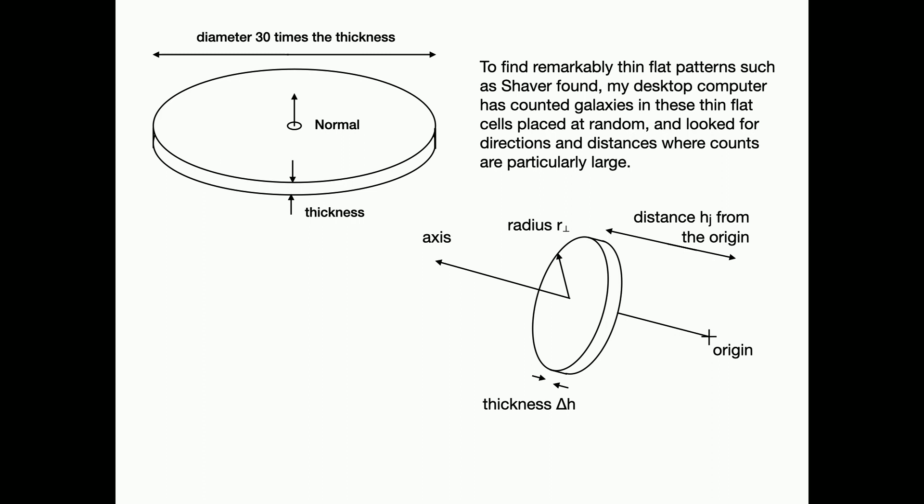I'm going to take these disks and count the galaxies in them, or the clusters of galaxies. I'll count objects in these disks. I'll put the disks in various distances from us, various orientations, and you know a computer loves this repetitive work. Place the disk at random, count the galaxies, count the objects, and then eventually discover whether there are special distances and orientations in which the disk contains an unusually large count of objects. That's the game.